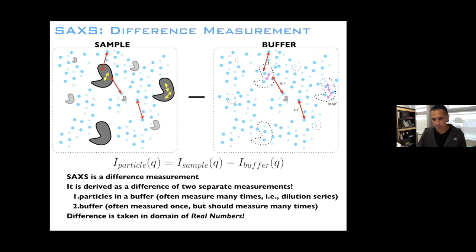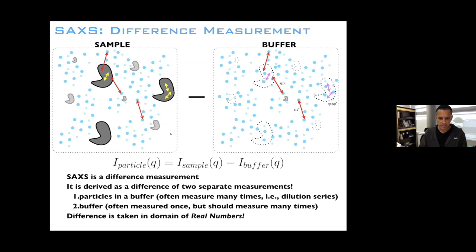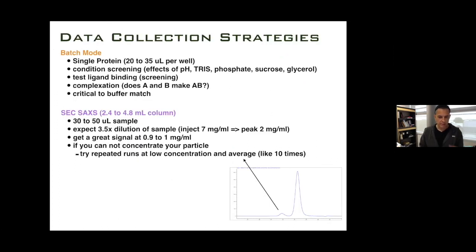What's left over after subtracting is the scattering of the protein plus the excluded volume scattering. Programs like FOXS and CRYSOL have corrections for the excluded volume. The intensity of the particle equals the difference between the intensity of the sample minus the intensity of the buffer. This difference is taken in the domain of the real numbers — there are no imaginary numbers.